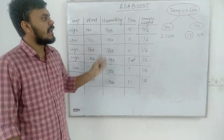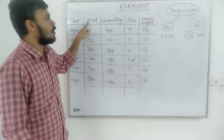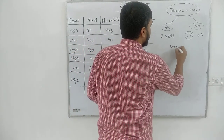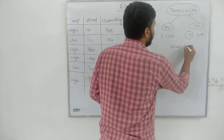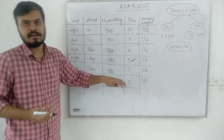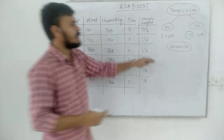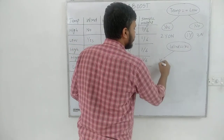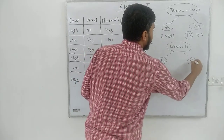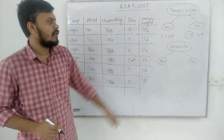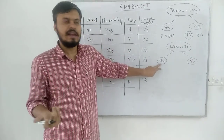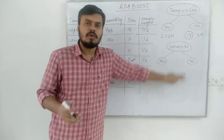Now let's create the second decision stump on the wind column. The criteria is wind equals yes. If the incoming point has wind yes, we will say yes, we will play. If wind is no, then we will not play.